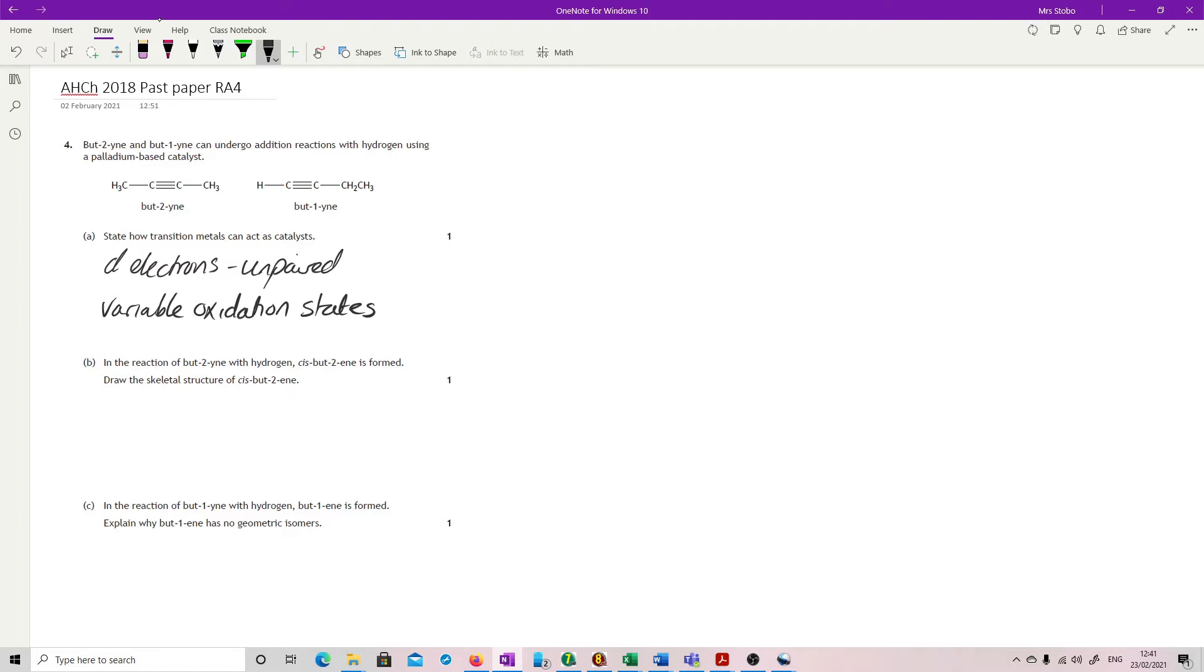In the reaction of bute-2-ine with hydrogen, cis-bute-2-ene is formed. Draw the skeletal formula of cis-bute-2-ene. So cis means that we have the two functional groups or the two groups that we're looking at around the double bond on the same side of the double bond. Let's put the double bond in. Let's put them on the same side. That's it. Any way around that you draw it, as long as that is the structural system that you've got.